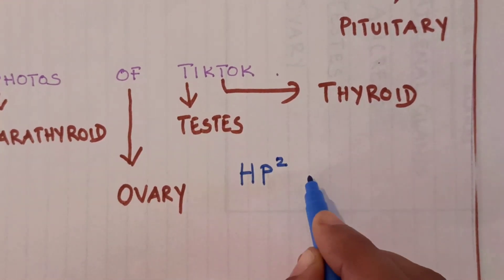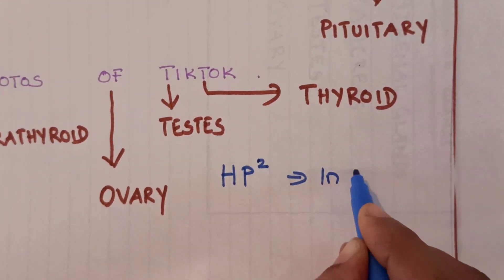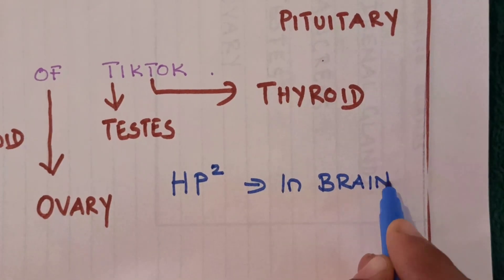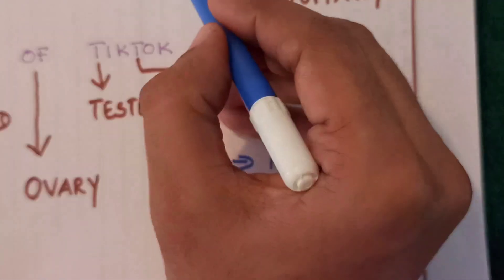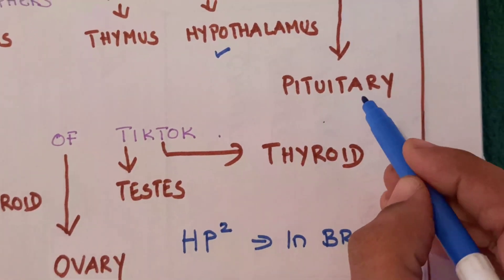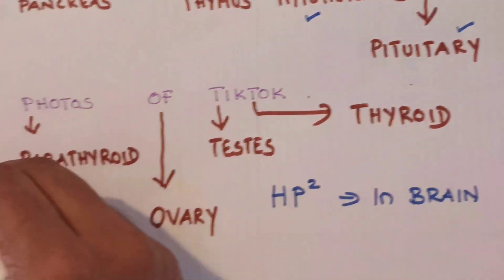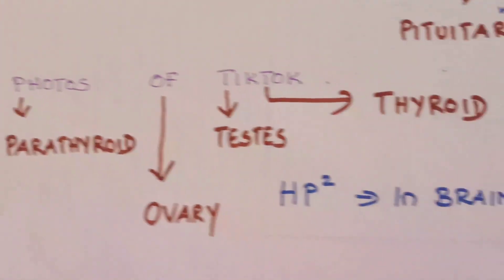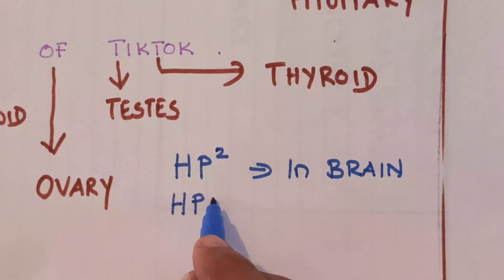HP square in brain. This is an easy technique to remember the glands located in the brain: hypothalamus, pituitary, and pineal — HPP, or HP square.